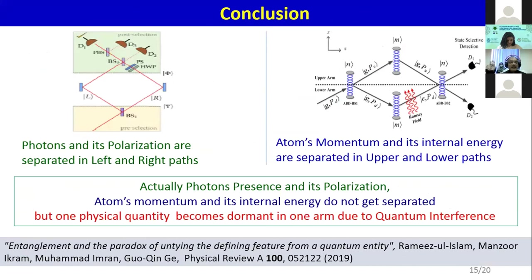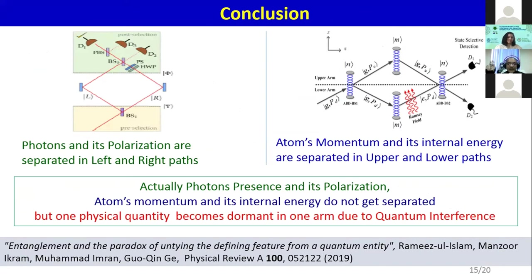Comparing the two: in Aharonov's paper the photon gets separated from the polarization; here atomic momentum gets separated from the internal energy. It looks very strange how an atom's energy can be separated from the atom, or a photon's polarization can be separated from the photon. We get a different interpretation. Aharonov says the photon's polarization gets separated from the photon. We say no — this is not the true explanation. Actually, one property — polarization — becomes dormant with respect to the other. One becomes dormant, one becomes available.